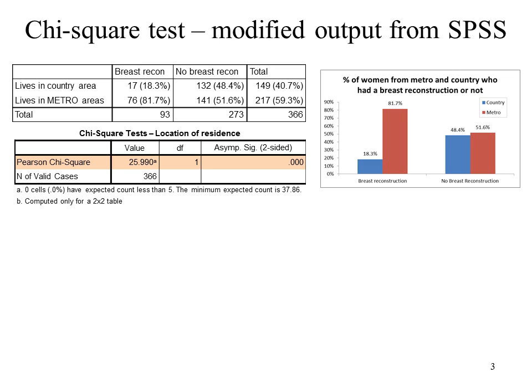There's also a bar graph for anyone who likes to see data visually instead of in a table. As you can see, for women living in the country area, 18% had a breast reconstruction compared with 81-82% living in metro areas. The p-value is less than 0.001, so this is statistically significant.